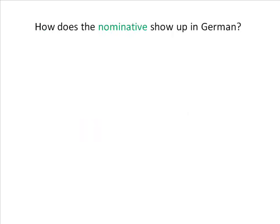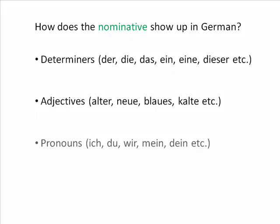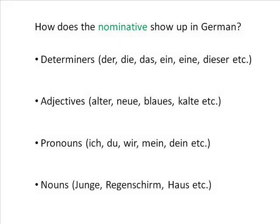So how does the nominative show up in the German language? As I mentioned earlier, you see it in determiners, adjectives, pronouns and nouns. I'll start with nouns because they're easy. The nominative is the basic form of the noun — it's the form you'll see in dictionaries. So there are no changes to this form when you use a nominative. German nouns don't usually change when they're in different cases, so this is actually the form you'll see most of the time, except in some instances which I'll talk about in later podcasts.